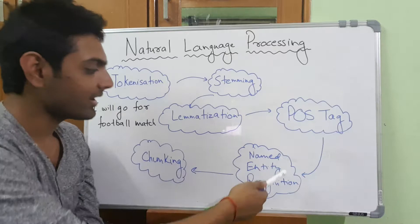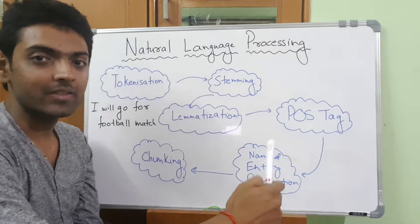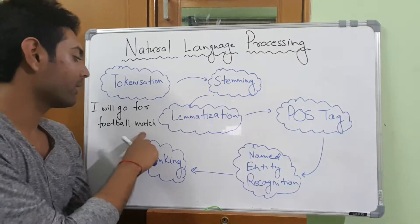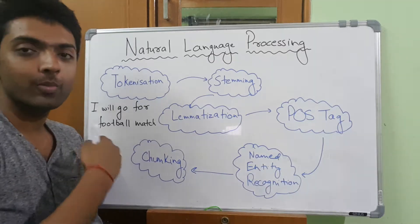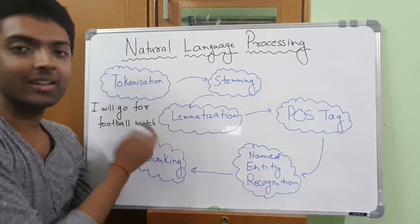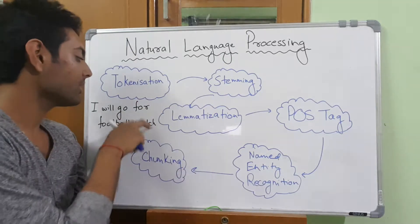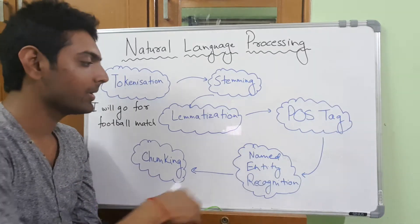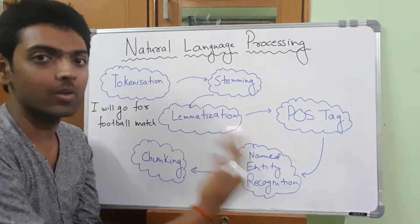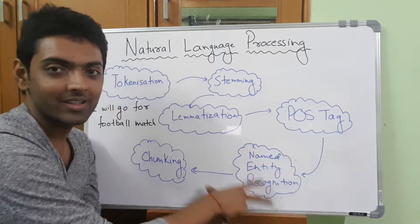The second last is named entity recognition. In this portion, the machine really understands if a part of the sentence is a location, a name, a place, or a time. For example, 'football match' — it can also be an event, a club event, or just a place. 'Match' can also mean many different things. What each word means in that particular sentence will be determined by named entity recognition — whether it's a name, a location, or something else. For instance, 'Google' can also be a place or a website. That kind of sense will be recognized in this particular portion.